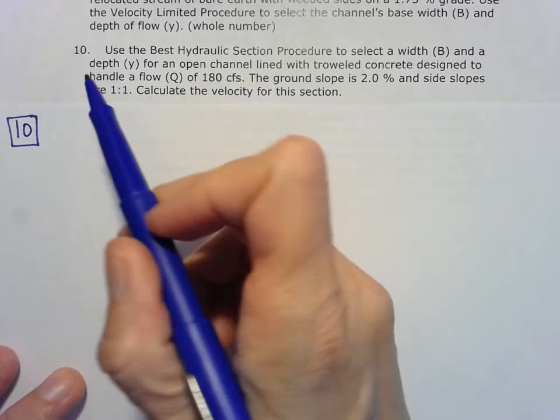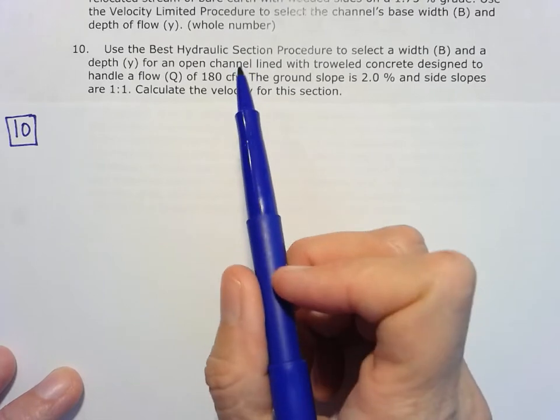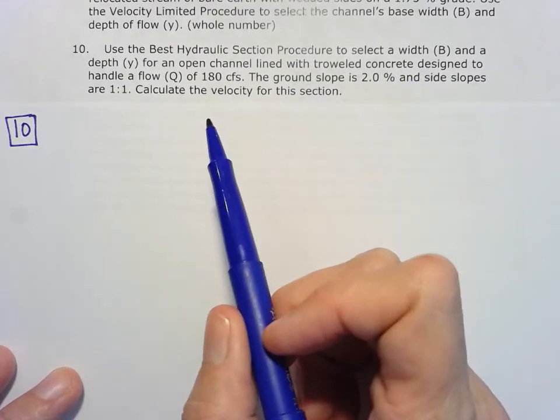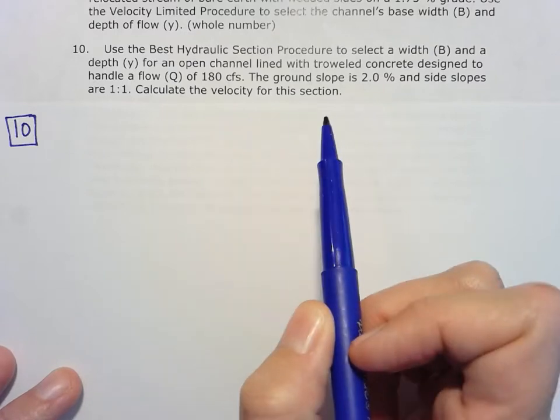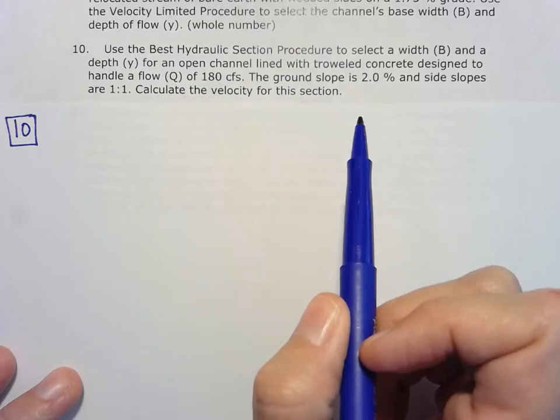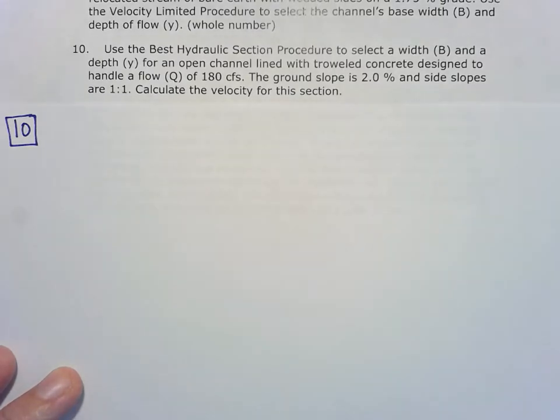Okay, problem 10 of the FE hydraulics homework for chapter 4 asks us to use the best hydraulic section procedure to select a width B and a depth Y for an open channel lined with troweled concrete designed to handle a flow of 180 cubic feet per second. The ground slope is 2%, side slopes are 1 to 1, and we'll also calculate the velocity for this section.